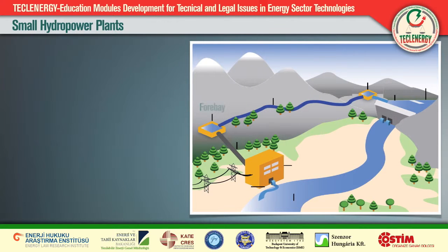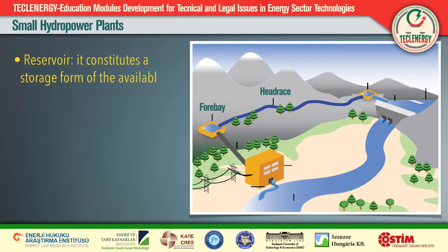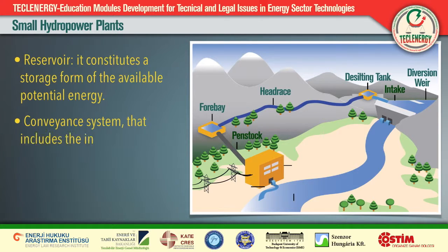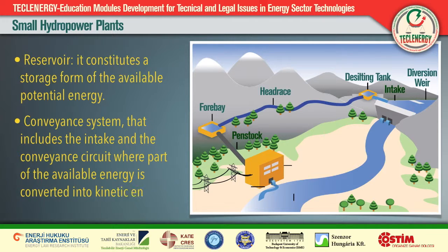Water has been used for energy purposes for thousands of years, primarily for grain milling. Water mills were constructed all over Europe and North America during the first decades of the industrial revolution to provide power for a variety of uses — from flax processing to textile spinning and weaving, from timber milling to woodworking. Hydropower is the most important energy source with no carbon dioxide, sulfur dioxide, nitrous oxide, or any type of air emissions, and no solid or liquid waste production.